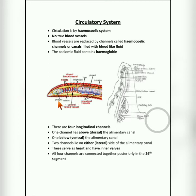There are four longitudinal channels running from anterior to posterior. The first one is above the alimentary canal - you can see this is the pharynx, esophagus, crop, and intestine. One channel lies above the digestive system, that is dorsal. One will be below the digestive system, the ventral position. And two channels lie on either side of the body, the lateral channels.